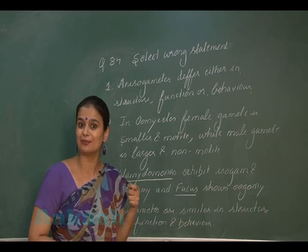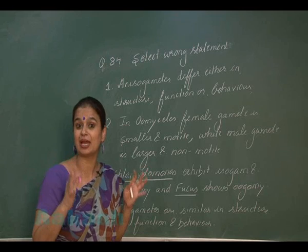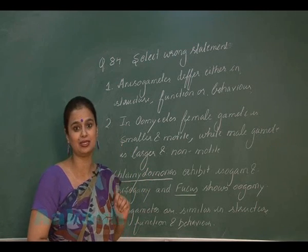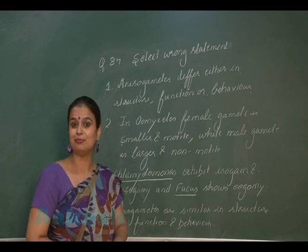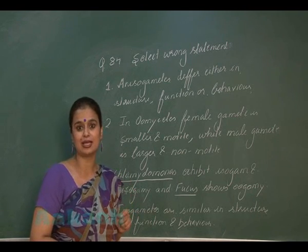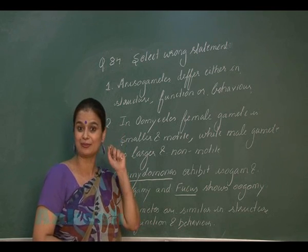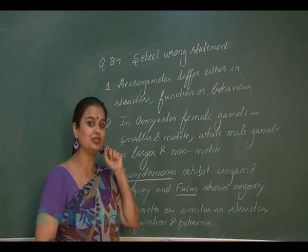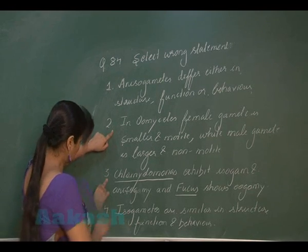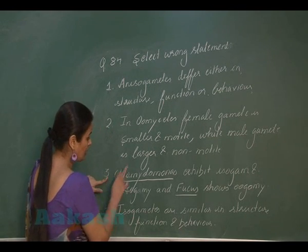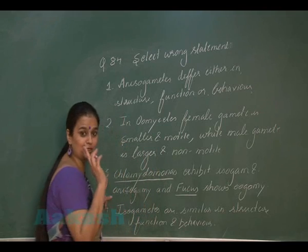In oogamous reproduction, the female gamete is larger in size and non-motile, while the male gamete is smaller in size and motile. So with respect to oogamous reproduction, the statement about oomycetes is incorrect. Now looking at the third option, in the case of Chlamydomonas, there is presence of isogametes as well as oogamous sexual reproduction.